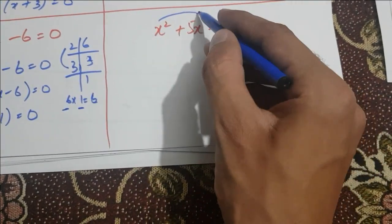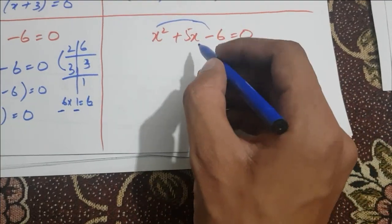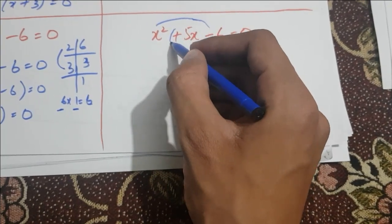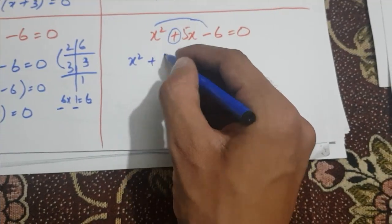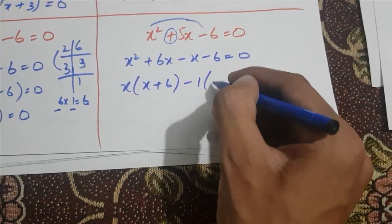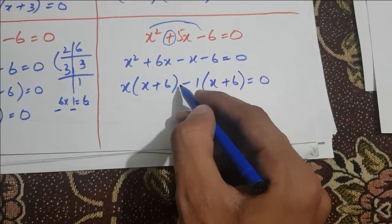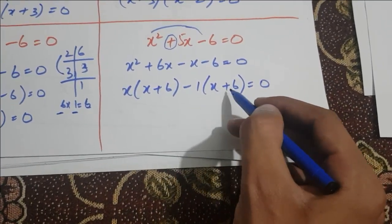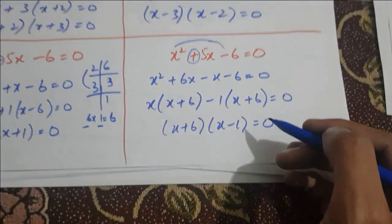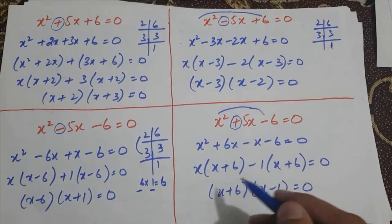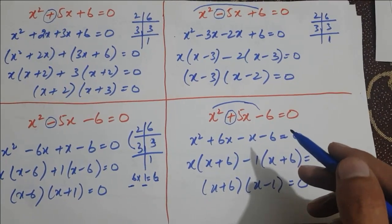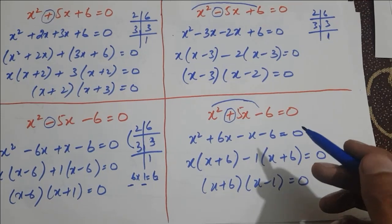For x² + 5x − 6 = 0, the product is negative, so the factors have opposite signs, and the factor with the positive sign will be the greater one. We write x² + 6x − x − 6 = 0. Factoring gives x(x + 6) − 1(x + 6) = 0, since we take minus common the signs inside the bracket change, giving (x + 6)(x − 1) = 0. In this way I have covered all the concepts and basic techniques used in factorization by the middle term breaking process. Thank you.